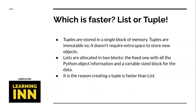Which is faster? Here are some key facts about lists and tuples. Tuples are stored in a single block of memory. Because tuples are immutable, they have a fixed size and do not require extra space to store new objects. Lists, on the other hand, are allocated in two blocks.